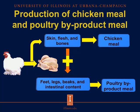In this slide, we can see how is the production of chicken meal and poultry by-product meal. We have on the left a chicken, and during production to obtain the carcass, there are some leftovers that don't belong to the carcass. Those products are skin, flesh, and bones, and these are the main components of chicken meal. There are other components also that don't belong to the carcass — feet, legs, beaks, and intestine content — and when those components are combined with skin, flesh, and bones, we obtain poultry by-product meal.